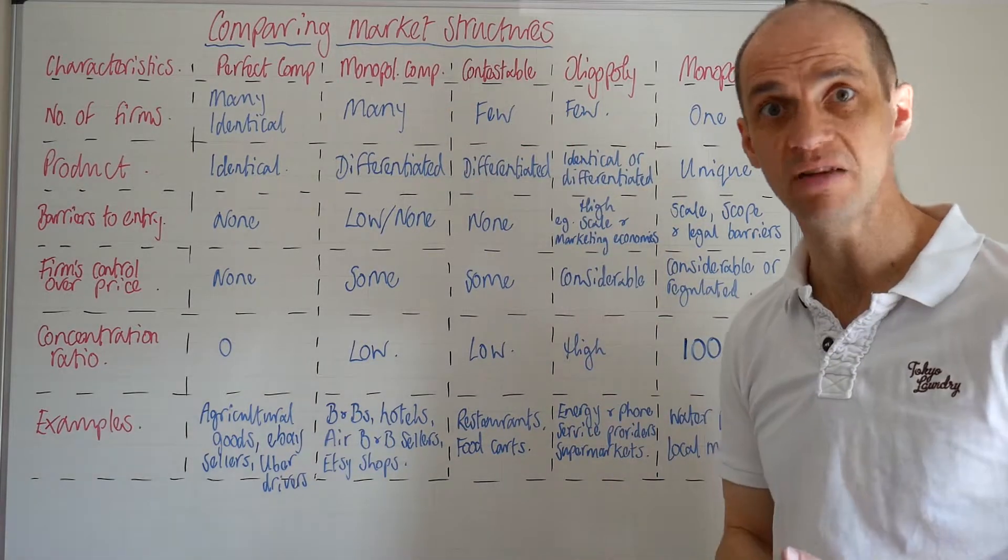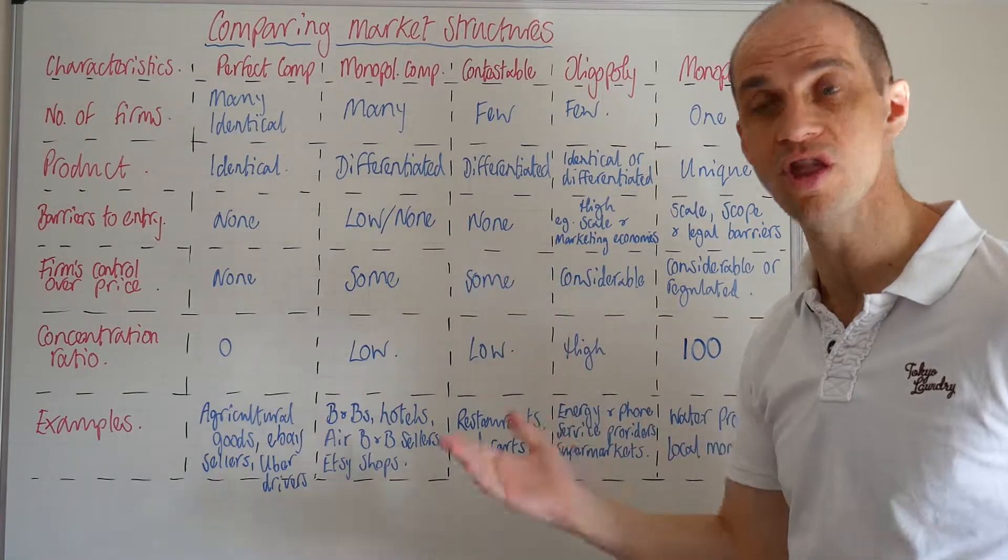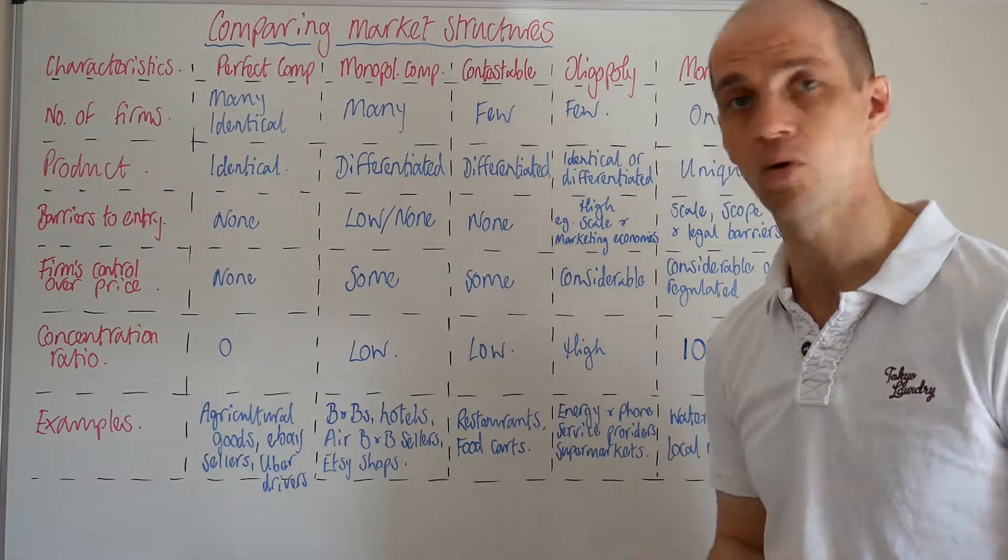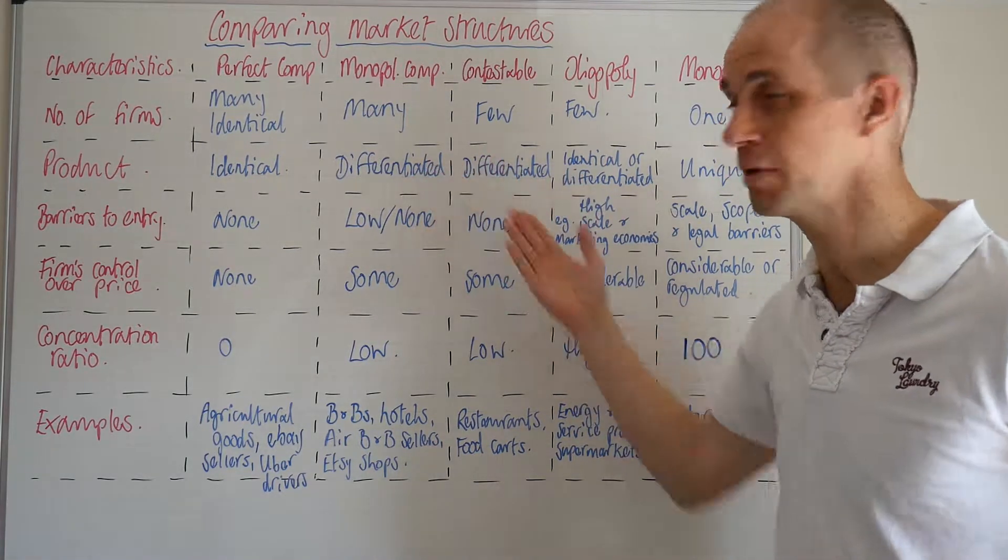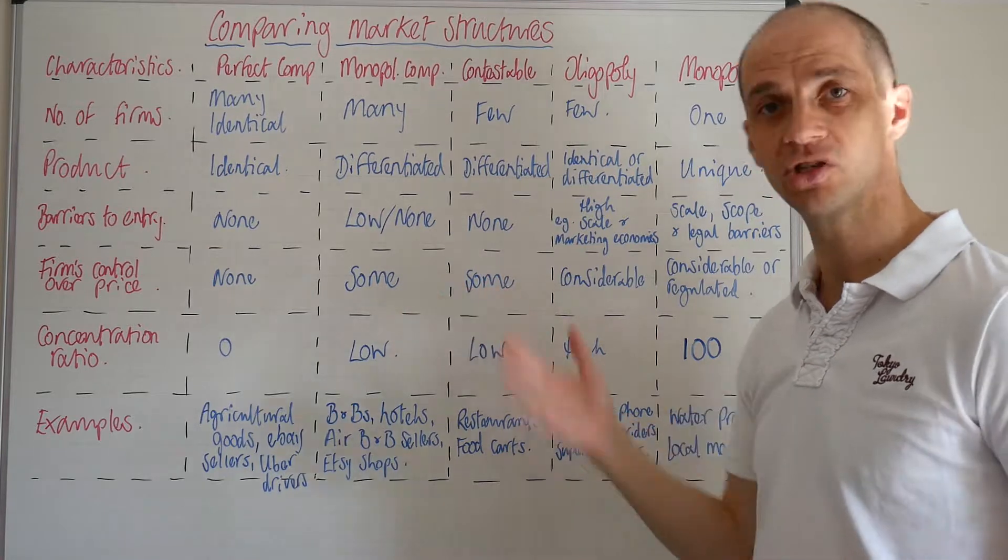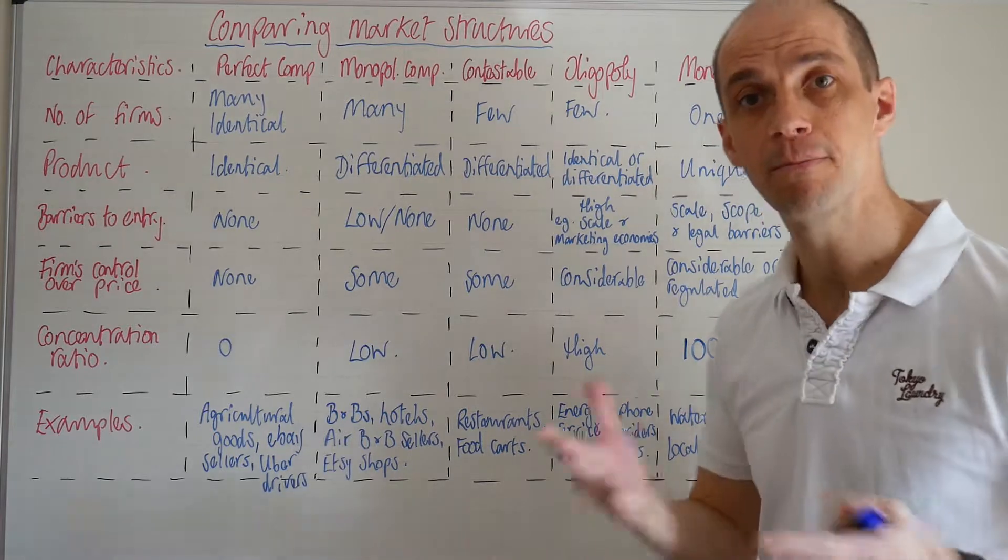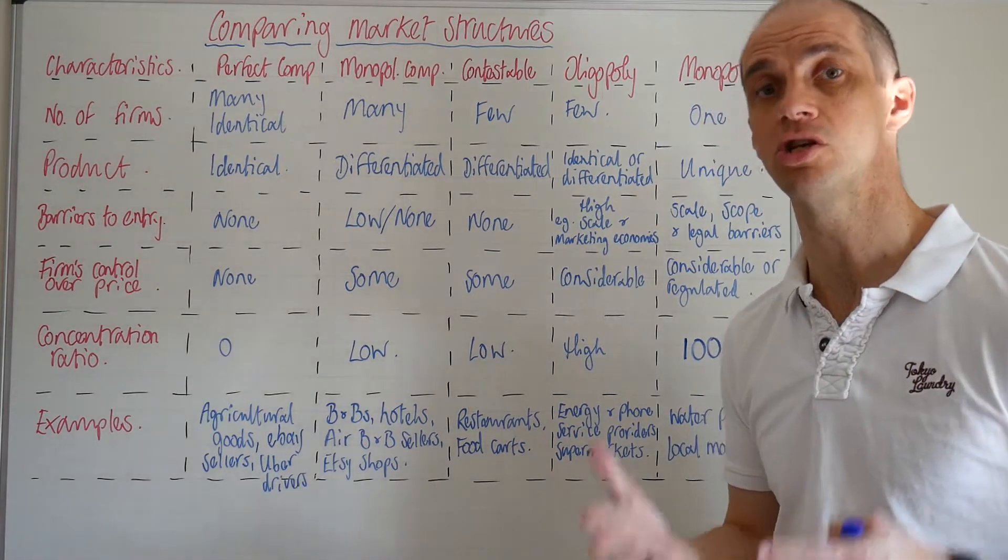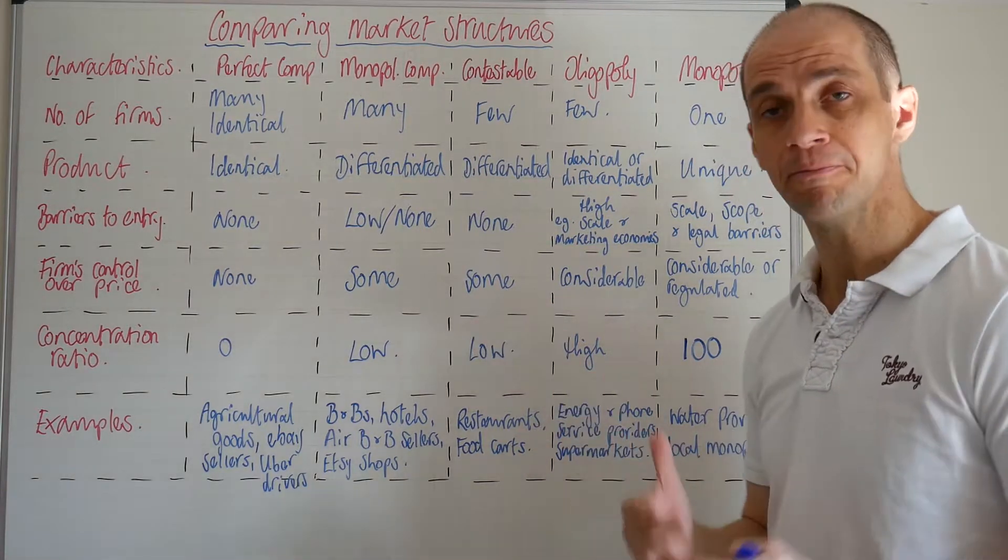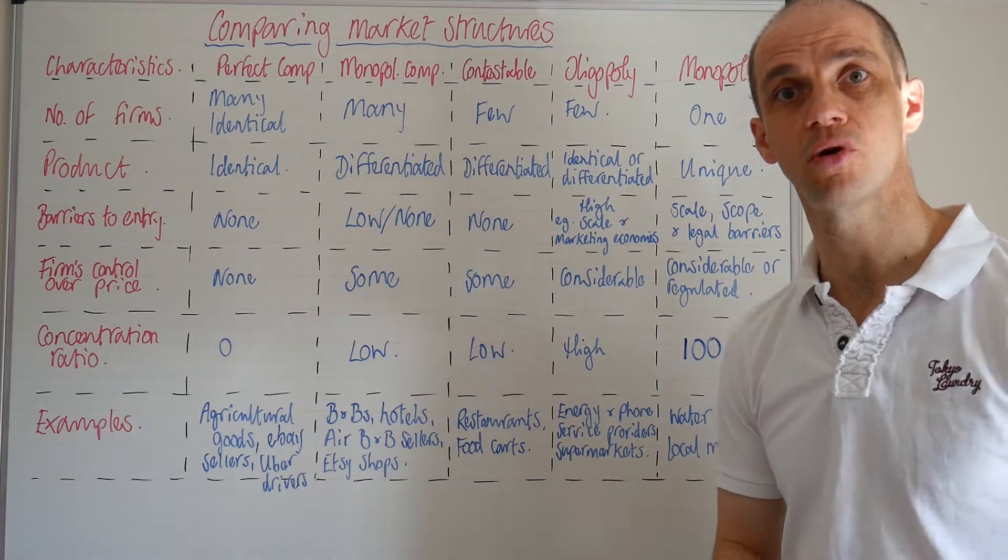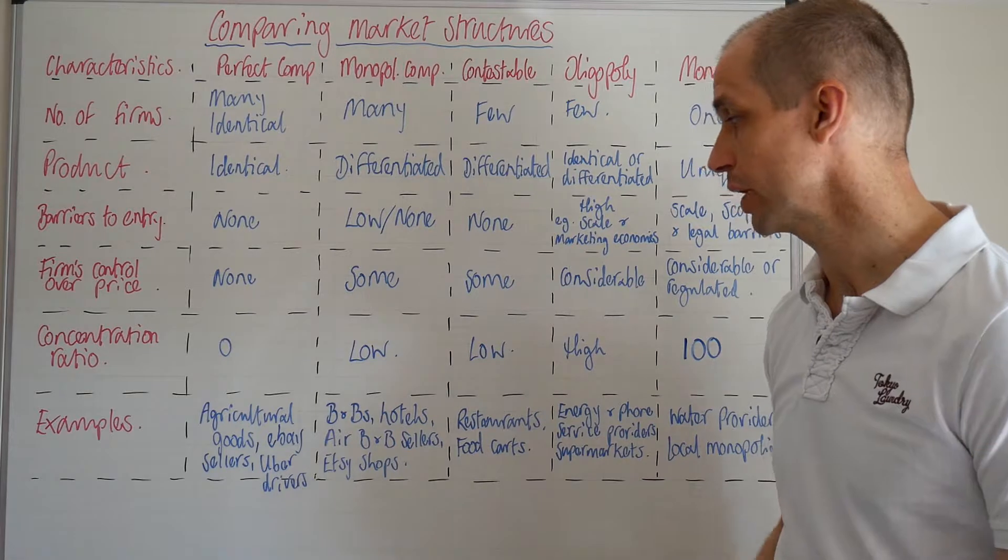Monopolistic competition, where you've got many firms. There's a differentiated product, of course. Barriers to entry are low or none. The firm's control over price—well, they have some degree of control, and that is because of the differentiated products. They do have some ability to be a price maker rather than taker. But yet, there are a lot of substitute products available and we saw how elastic their demand curve is likely to be. As such, they're only going to have some control over price and the concentration ratio is going to be very low.